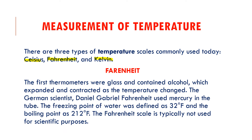The first thermometers were glass and contained alcohol which expanded and contracted as temperature changed. The German scientist Daniel Gabriel Fahrenheit used mercury in the tube for the first time. The freezing point of water was defined as 32 degrees Fahrenheit and the boiling point as 212 degrees Fahrenheit. The Fahrenheit scale is typically not used for scientific purposes.